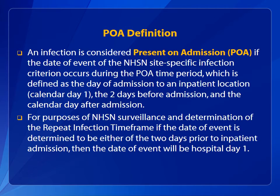An infection is considered present on admission, or POA, if the date of event of the NHSN site-specific infection criterion occurs during the POA time period, which is defined as the day of admission to an inpatient location — calendar day one — the two days before admission, and the calendar day after admission. For purposes of NHSN surveillance and determination of the repeat infection timeframe, if the date of event is determined to be either of the two days prior to inpatient admission, then the date of event will be hospital day one.